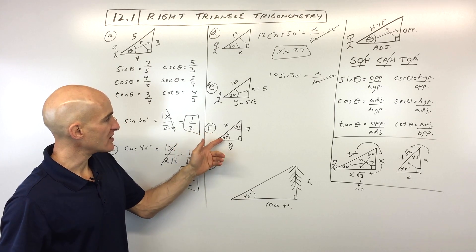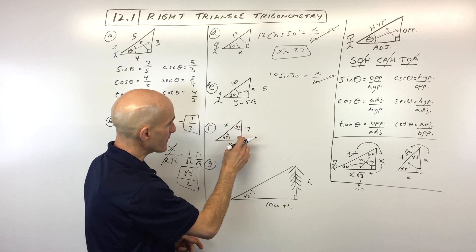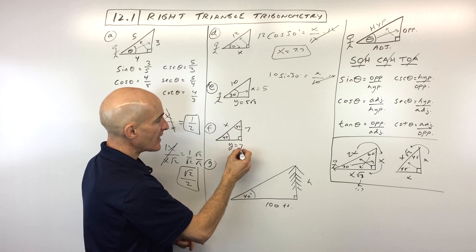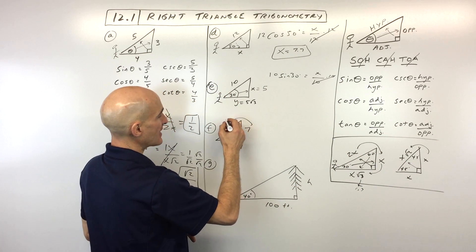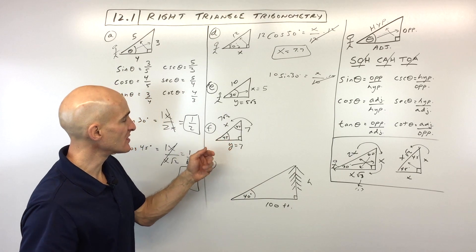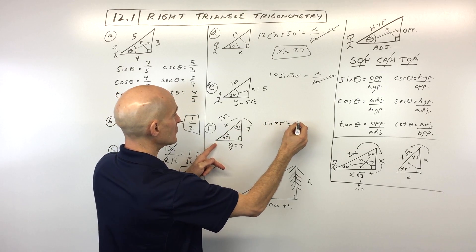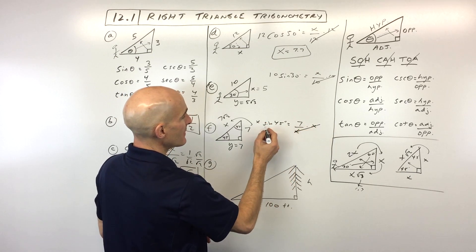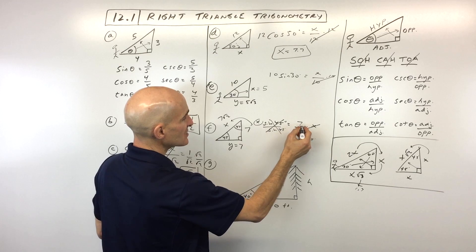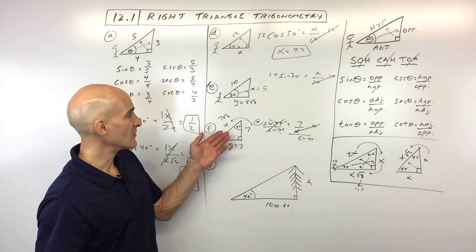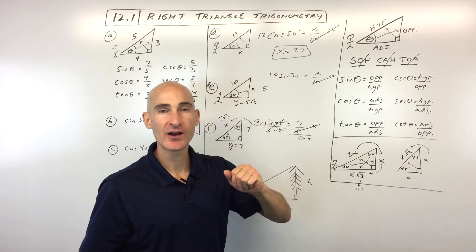For example F, this is a 45-45-90 triangle and they're giving us one of the legs. Since it's an isosceles triangle, if this side is 7, then Y is also 7. To get the hypotenuse, multiply by square root of 2, so X equals 7 square root of 2. Alternatively with trig: sine of 45 equals opposite over hypotenuse, multiply both sides by X, then divide both sides by sine of 45 to get X equals 7 divided by sine of 45, giving the approximate hypotenuse value.